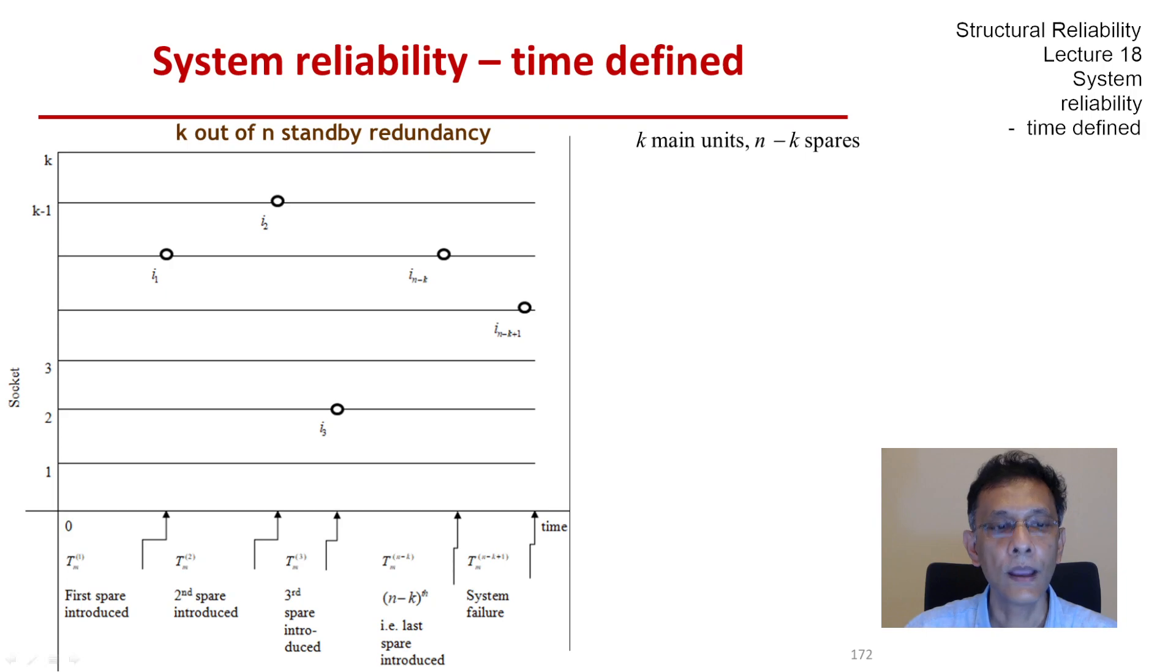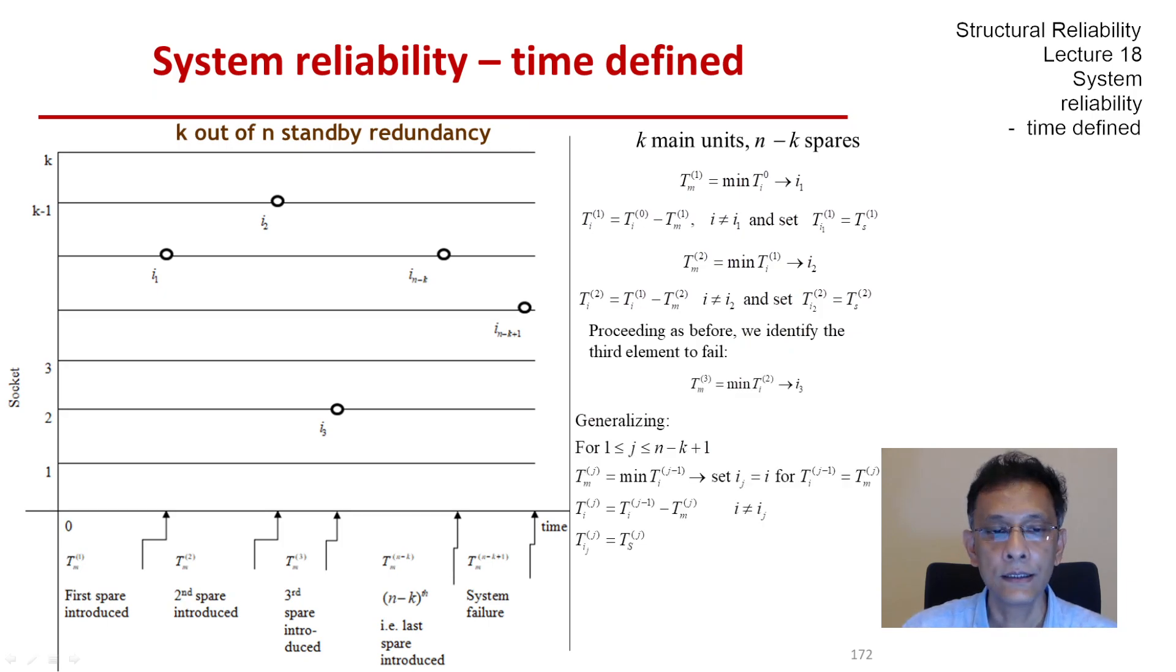This continues. We have obtained t_m^1, t_m^2, put in two spares, then get the third element i_3. We can generalize this process: for all j from 1 to n minus k plus 1, we find the t_m's and keep replacing until all spares are exhausted. The system time to failure is the sum of all the t_m's we have identified.